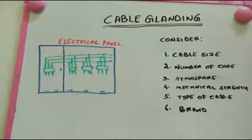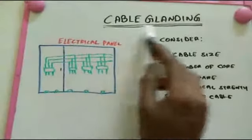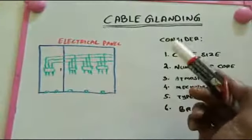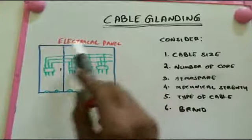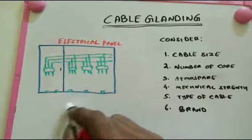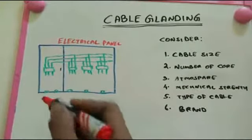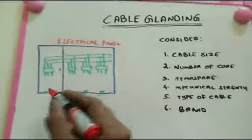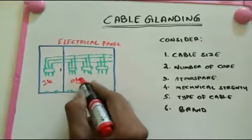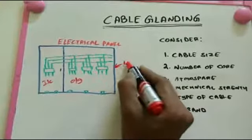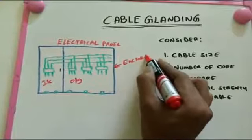Today we are going to see the cable landing — the electrical cable. We need to plan the end of connection, that means the panel incoming connection and outgoing connection, whatever it is going to connect. This is a simple electrical panel with incoming and outgoing connections. This is the enclosure — the outermost cabinet.